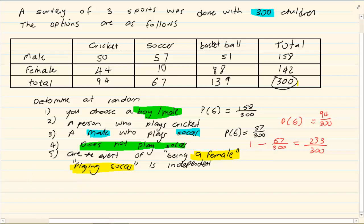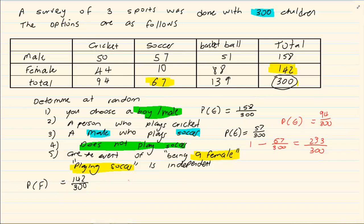What is the probability of being a female? The probability of being a female is 142. So we have 142 over 300. The probability of playing soccer is 67 over 300.